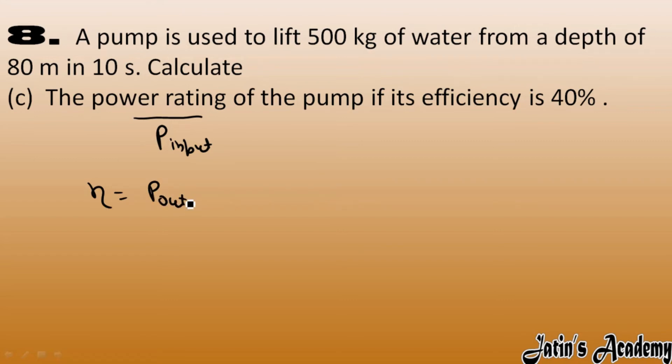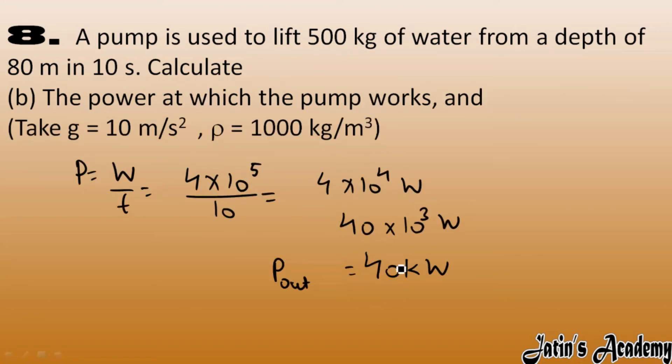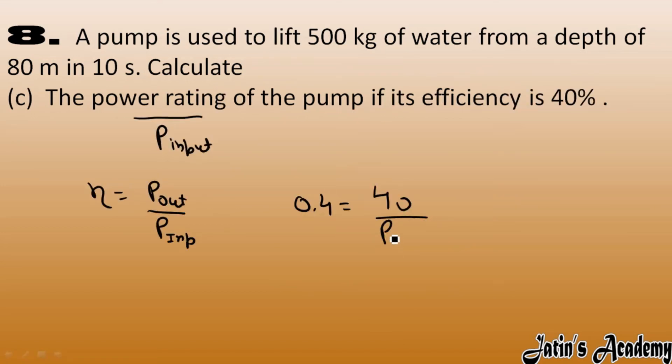So efficiency we have power output over power input. Now efficiency 40% means 0.4. Power output over power input equals 0.4. Power output is given as 40 kilowatt. Now we have calculated power output in the previous case as 40 kilowatt, so put the value 40 kilowatt and power input we have to calculate which is also called power rating.